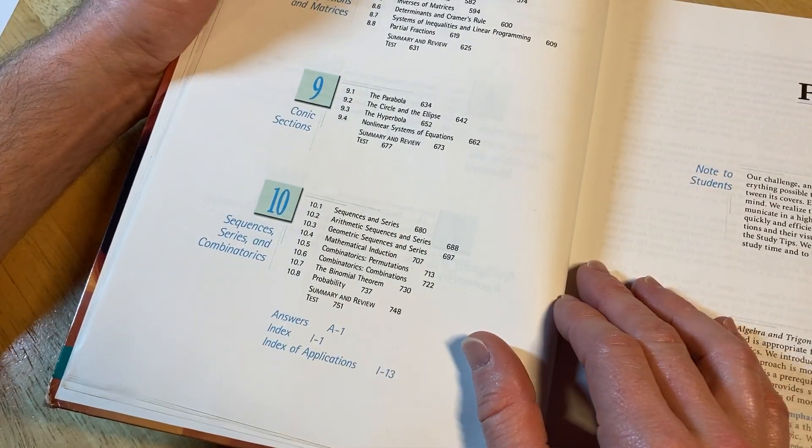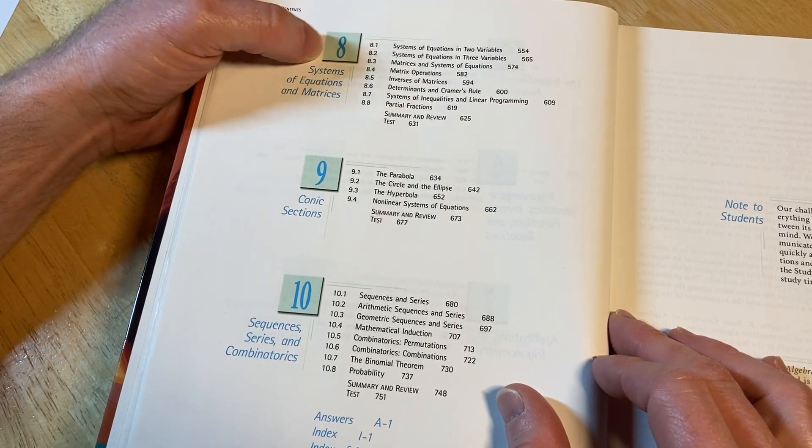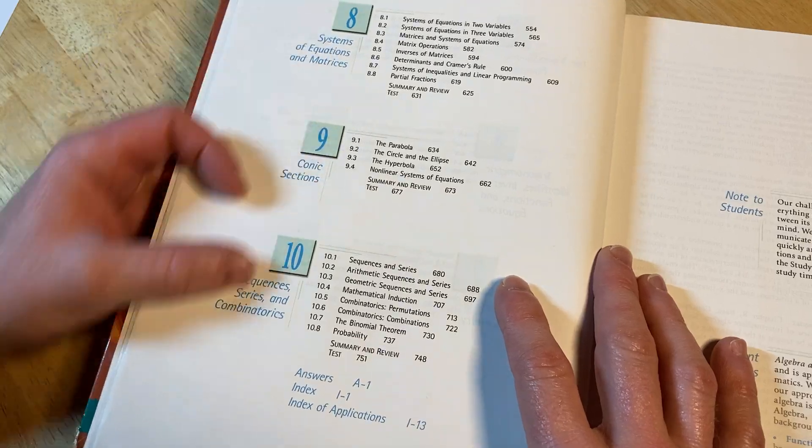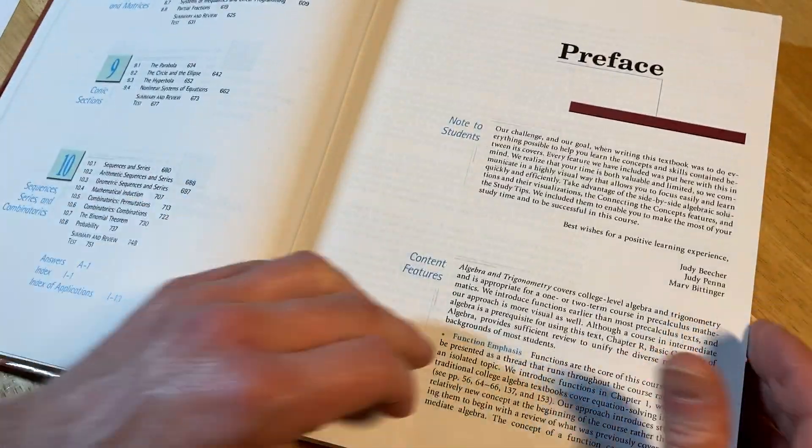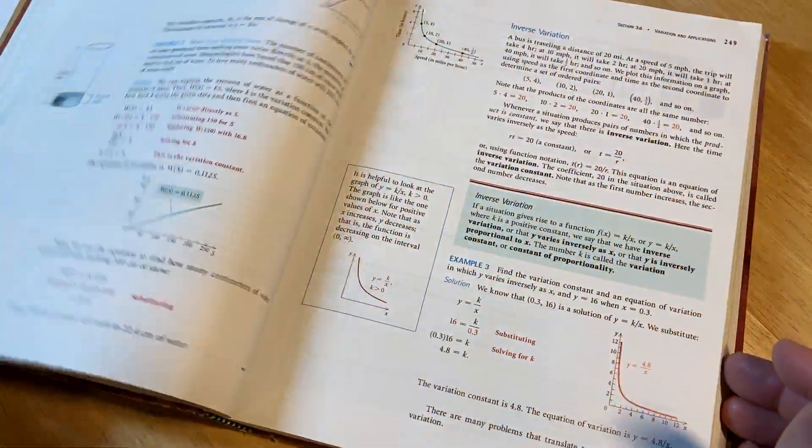And then eight is systems of equations and matrices. So that would be like a pre-calc course. Same with nine, which is conic sections. And ten. Let's actually take a look at the back of the book.